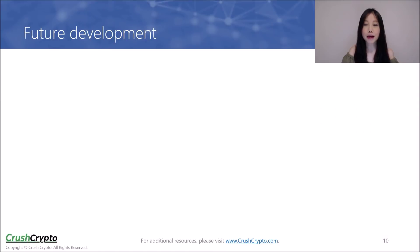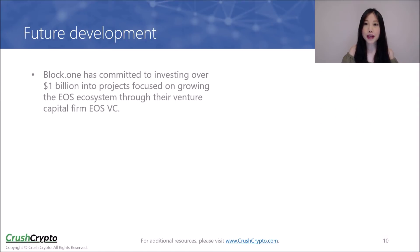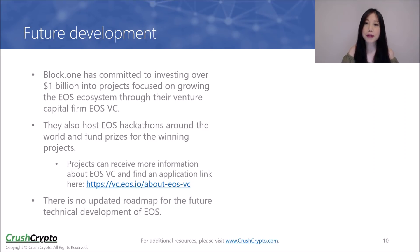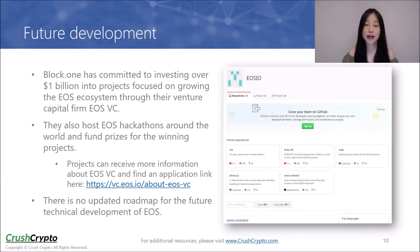In terms of future development, BlockOne has already committed to investing over $1 billion into projects focused on growing the EOS ecosystem through their VC firm. They also host EOS hackathons around the world and fund prizes for the winning projects. There is currently no updated roadmap for the future technical development of EOS. EOS is an open-source project, and its source code and development progress can be viewed on GitHub.